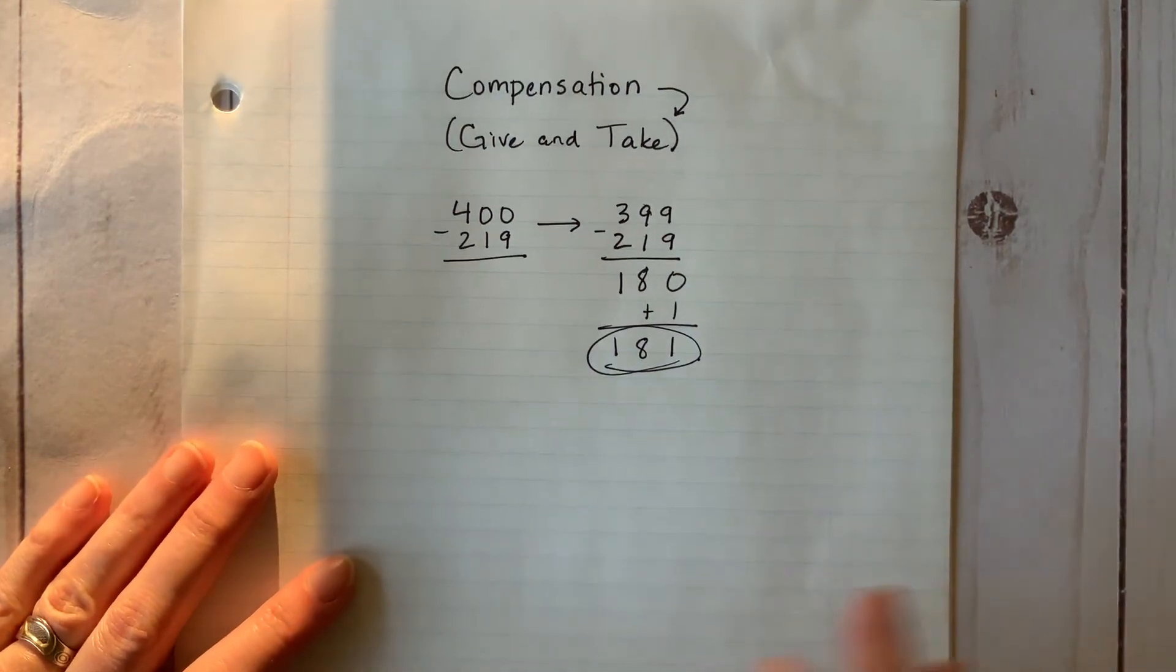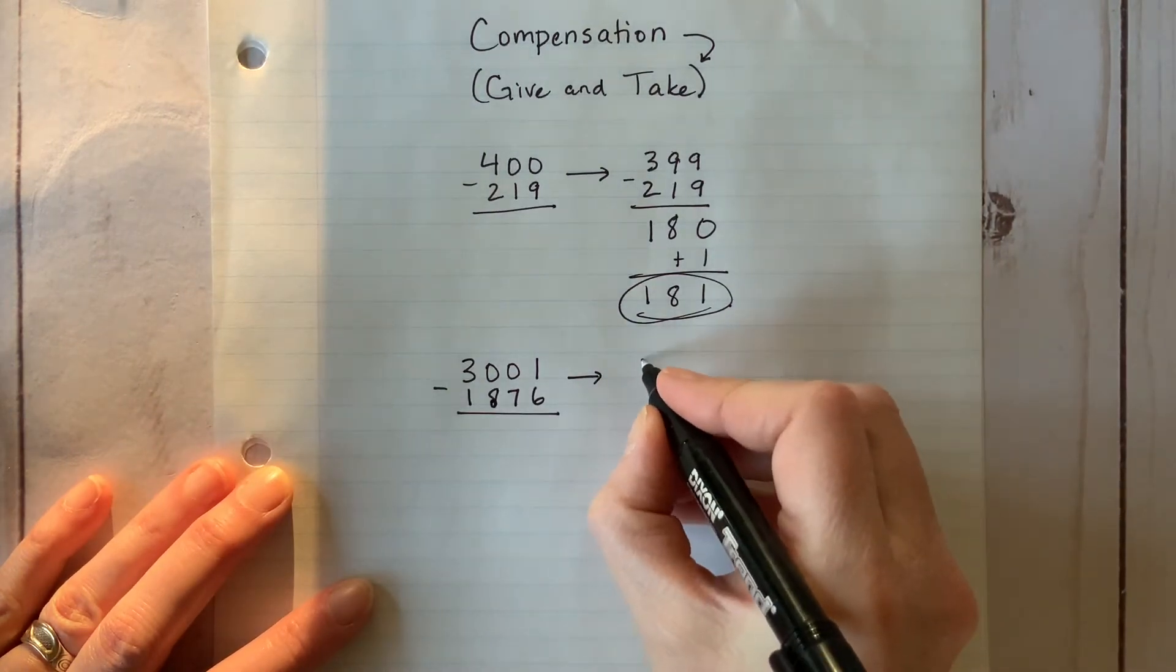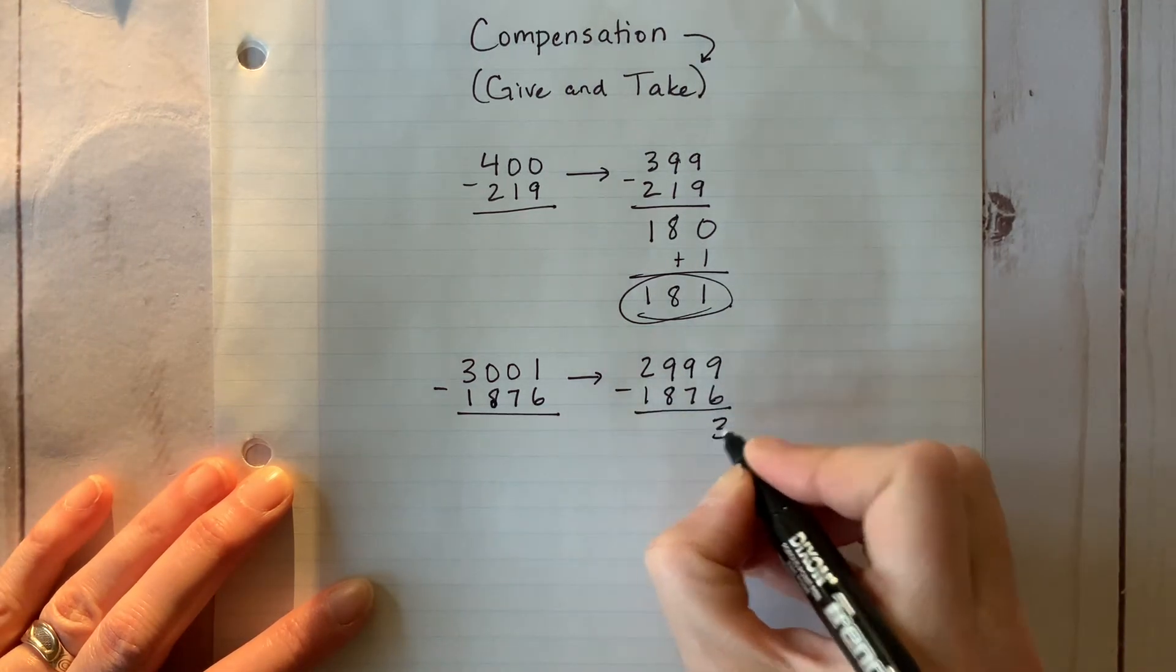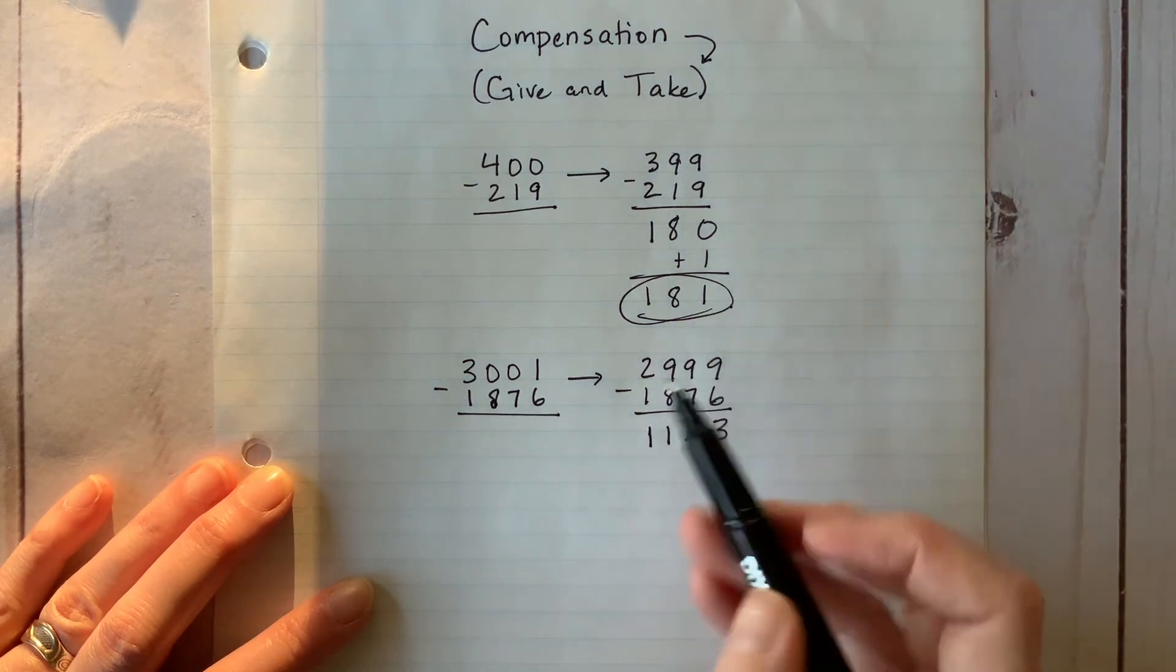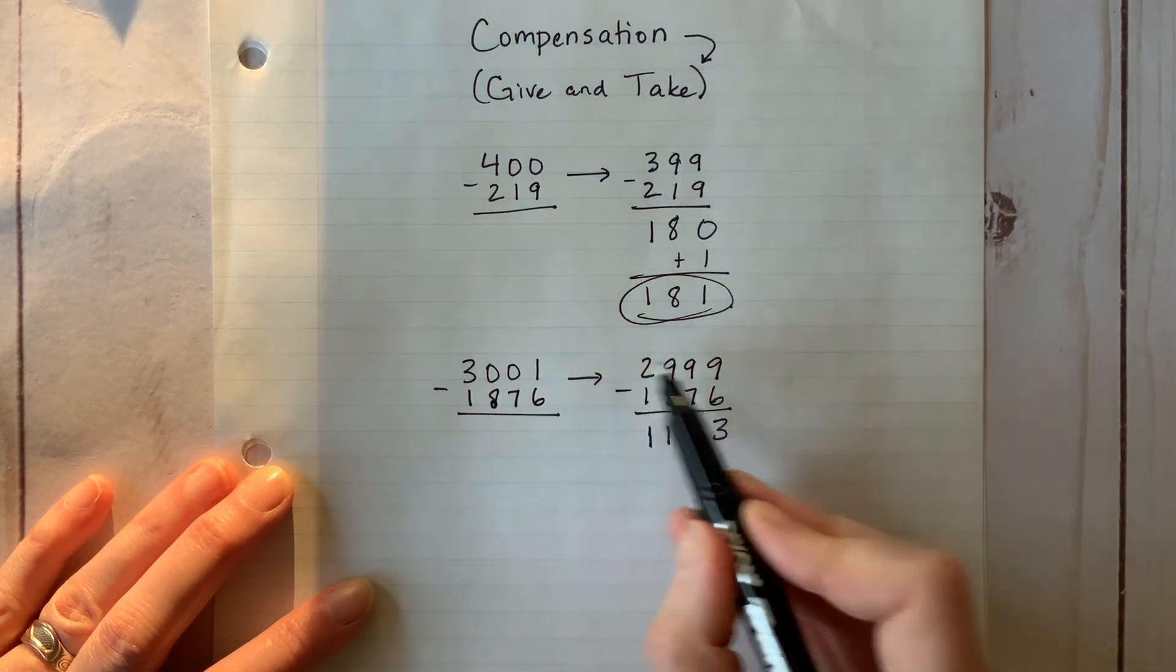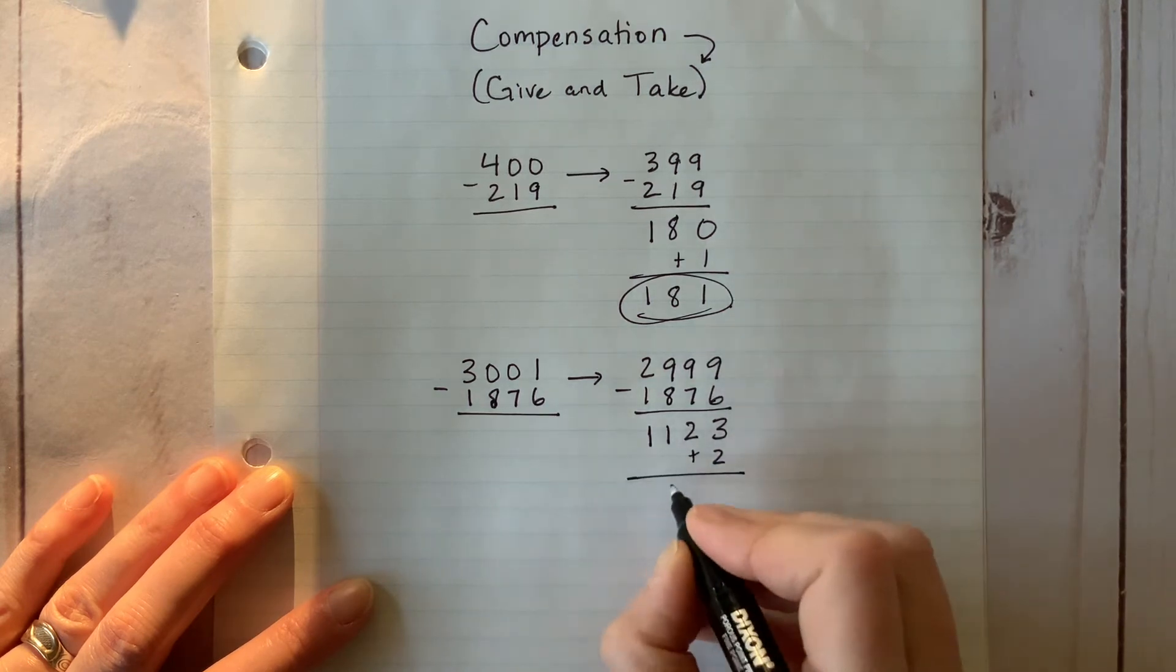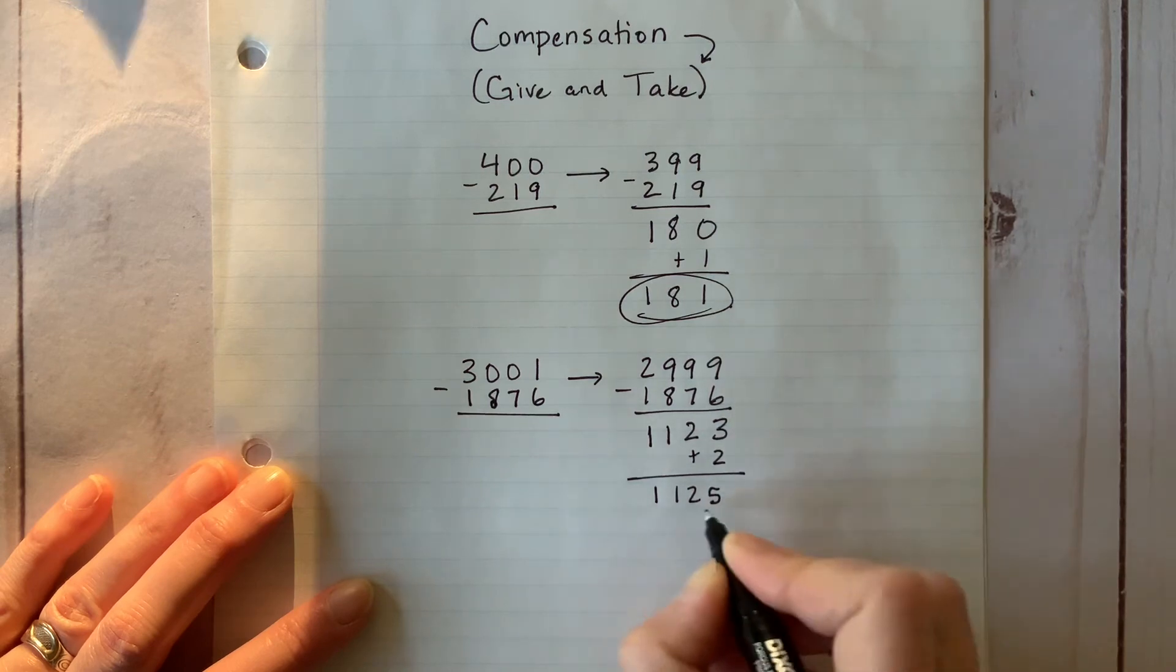Let's try another. This time, let's change the top number by two in order to make it easier to work with. There, that's better. Now we need to remember to compensate because the difference between them is smaller than it should be. Let's add two and perfect. Solution complete.